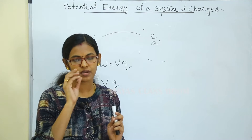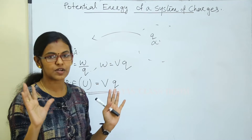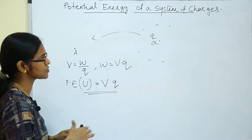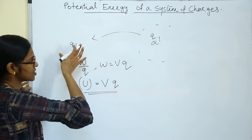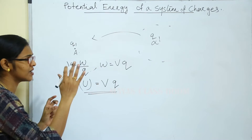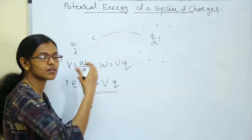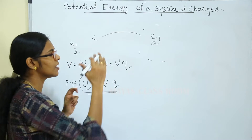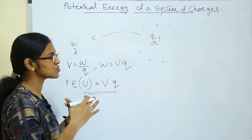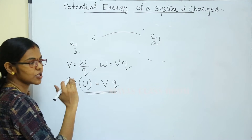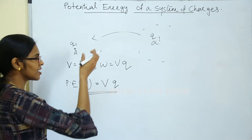Now we have two charges — the potential energy of a system of two charges. If we have two charges, we have the same equation. The system is considered with no influence from an external electric field. If we have a single charge q1, there is no influence from an external electric field, and the work done is zero.